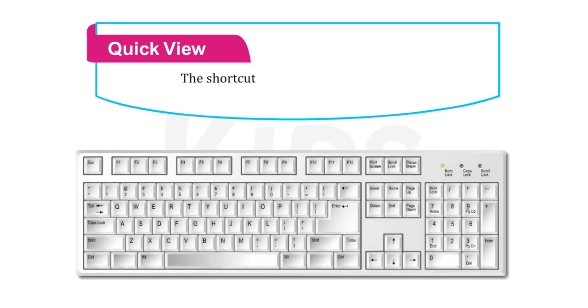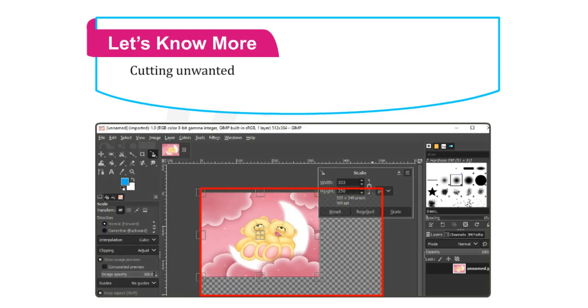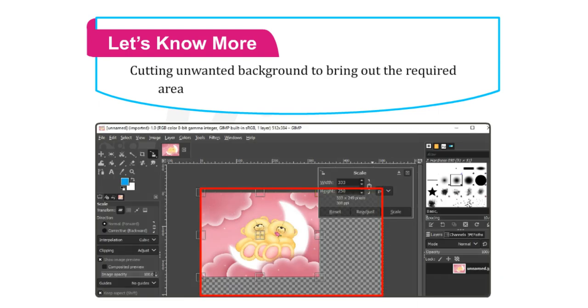The shortcut key to open the Scale tool is Shift plus T. Cutting unwanted background to bring out the required area of the image is called cropping an image.